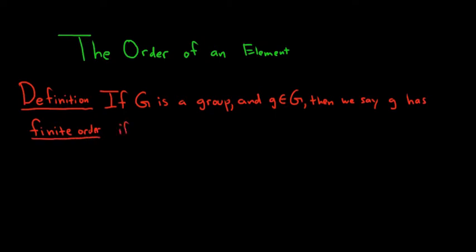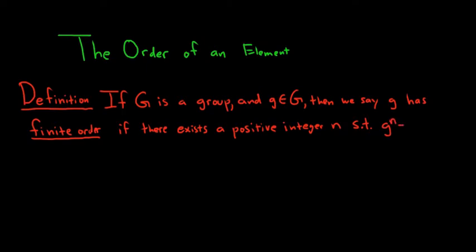An element has finite order if there exists a positive integer n such that g to the n is equal to the identity element. So when you raise it to the nth power, you get the identity element.